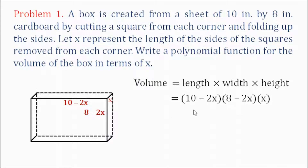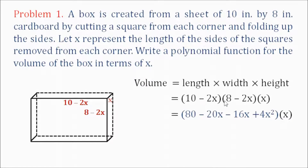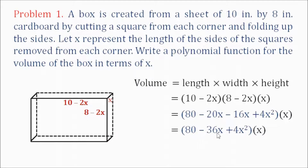First we are going to multiply these two binomials. So 10 times 8 is 80; 10 times negative 2x is negative 20x; negative 2x times 8 is negative 16x; and negative 2 times negative 2 is positive 4x squared. We can combine the second and third terms, so it becomes 80 minus 36x plus 4x squared. Now this trinomial will be multiplied by x.